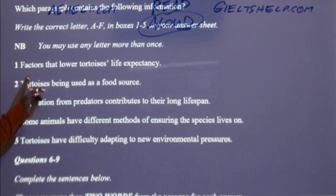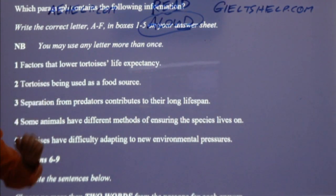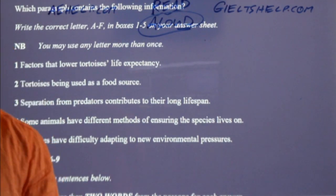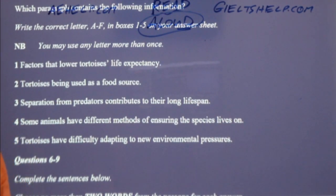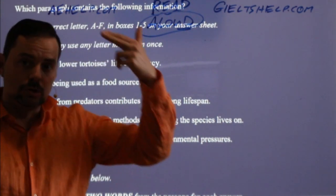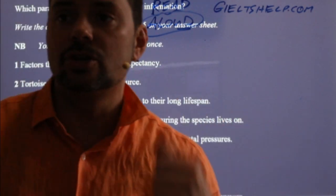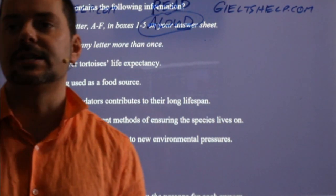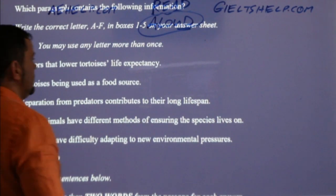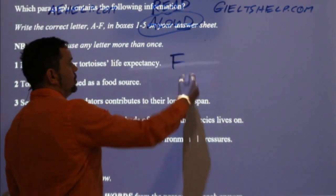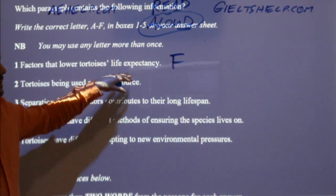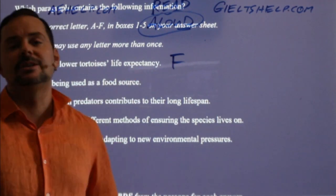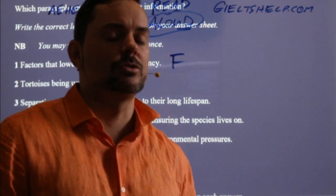Number one: 'Factors that lower tortoise's life expectancy' — which paragraph? It is the conclusion, paragraph F. So trying to skim read for this answer would have taken you a long time. You would have had to skim read the whole passage to get it. F — humans, rats, contaminants, pollution. Notice how most of you are getting this answer: F.